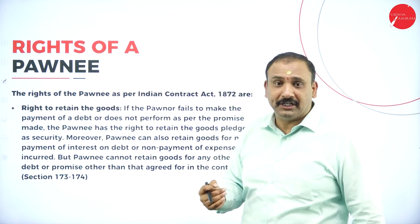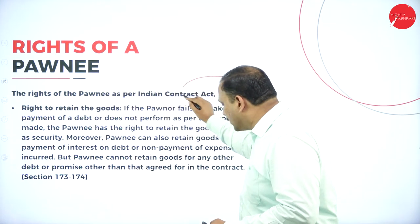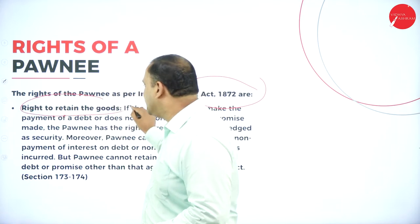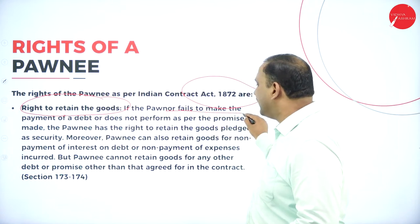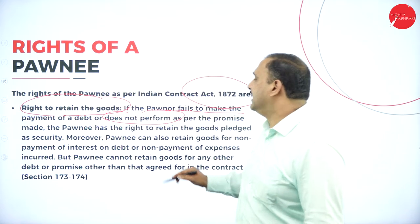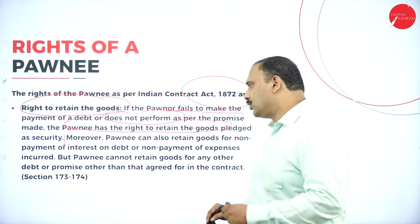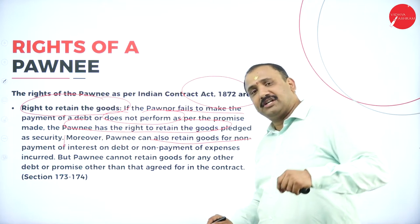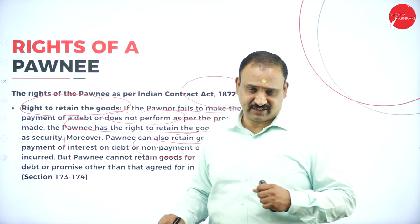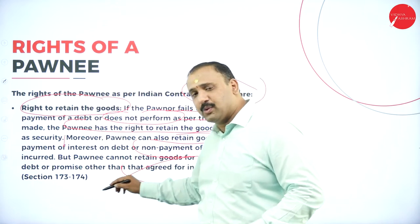Now we talk about the rights of the pawnee. As per the Indian Contract Act 1872, the pawnee has the right to retain the goods. If the pawner fails to make payment of debt or does not perform as per the promise, the pawnee has the right to retain the pledged goods as a security. Moreover, the pawnee can also retain goods for non-payment of interest on debt or non-payment of expenses incurred, but cannot retain goods for any other debt or promise other than the agreed one in the contract.